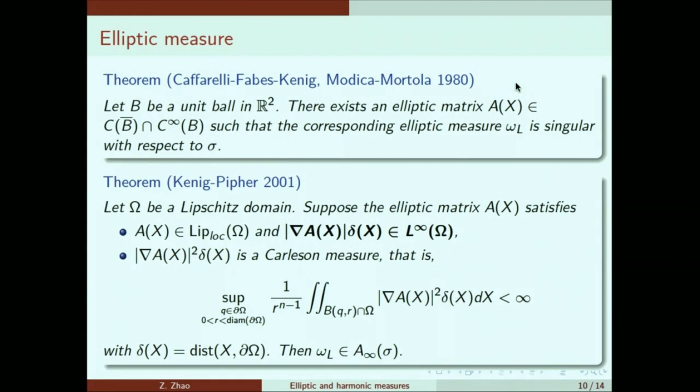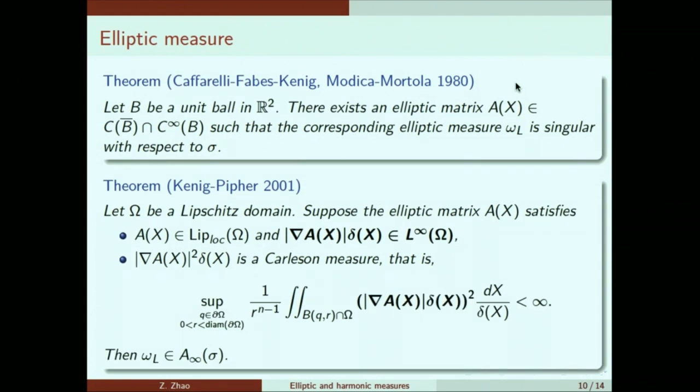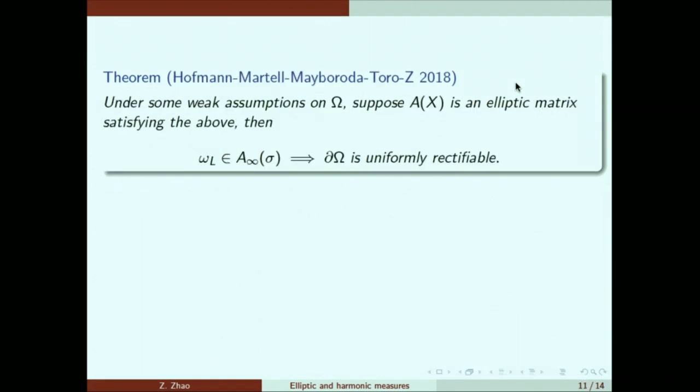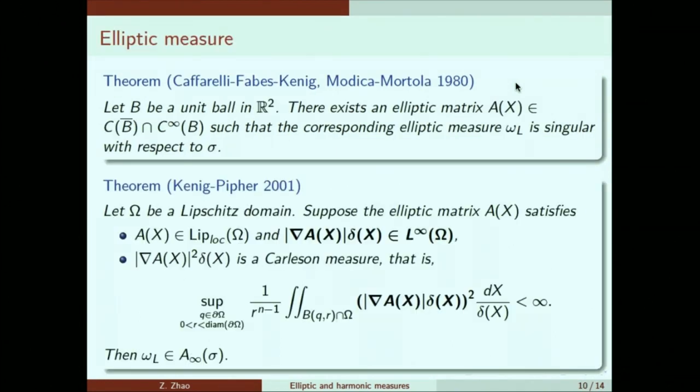There's a nice characterization of how big the singular we can afford. This is raised by Kenig and Pipher. The first condition just tells us the gradient of the matrix should scale like one over the distance to the boundary. The second condition seems complicated, but it gives us a quantitative way of stating how small this thing needs to be as we approach closer and closer to the boundary. And we give a converse result to that. In fact, it tells us that this type of elliptic matrix are the right ones to study.